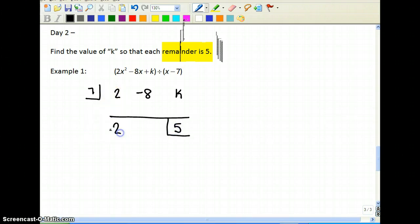Bring the 2 down for synthetic division. 7 times 2 is 14. Negative 8 plus 14 is 6. 7 times 6 is 42. Now we add going down. So k plus 42 is equal to 5.